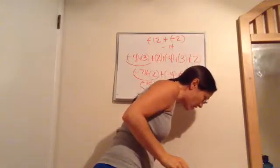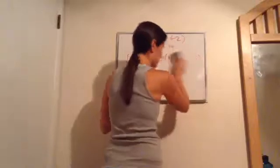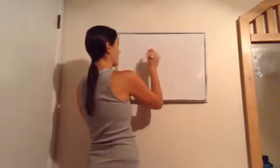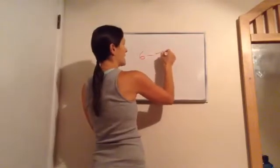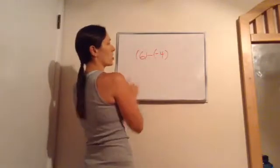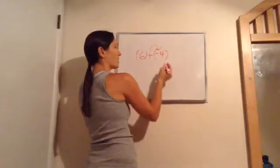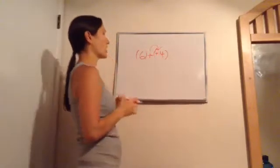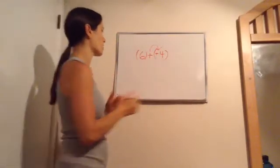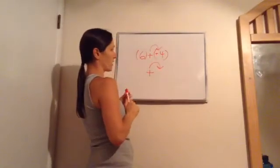That covers the definition of subtraction and the addition rules. Always work on changing minuses to plus-negatives. For example, six minus negative four: put each in parentheses, change the minus to plus, and flip the sign of the number to the right — negative four becomes positive four. You're always changing minuses to a plus and taking the opposite sign. That's the key rule.